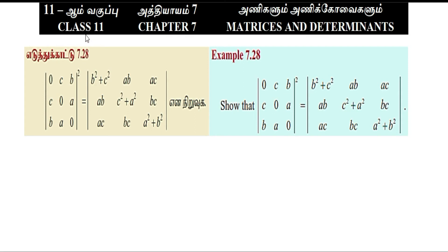Salamatakim students, class 11, chapter 7, example 7.28: show that the determinant of the matrix [0, C, B; C, 0, A; B, A, 0] whole square could be written equal to — as shown in the answer proof.